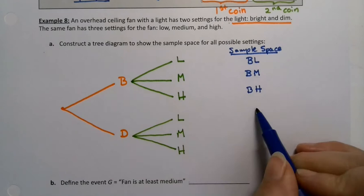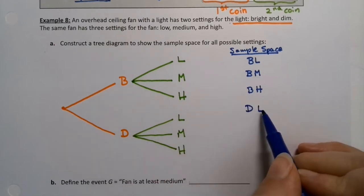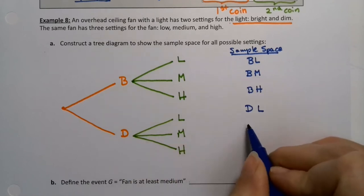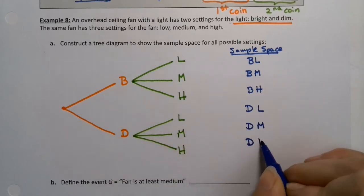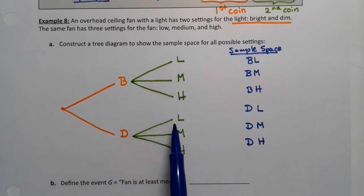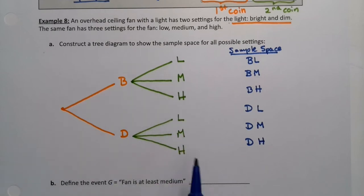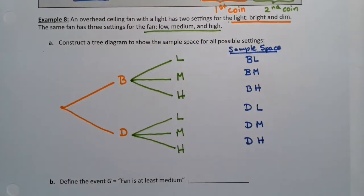Now this L comes from choosing dim first. So dim, low. Dim, medium. And dim, high. And there we have it. We have the tree diagram working through the two possibilities for the light, then the three possibilities for the fan. And then we have our sample space all listed out in vertical order. Each of these items at the end connects to one of those items in the sample space.